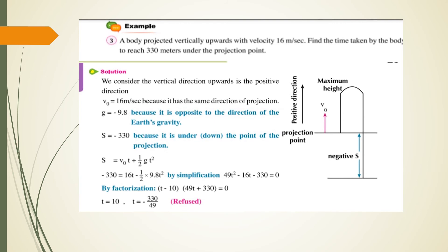Negative 330 equals 16t minus half times 9.8 times t squared. After simplification, 49t squared minus 16t minus 330 equals zero. You can use factorization to find t minus 10 times 49t plus 330 equals zero. Then t equals 10 and t equals negative 330 over 49.